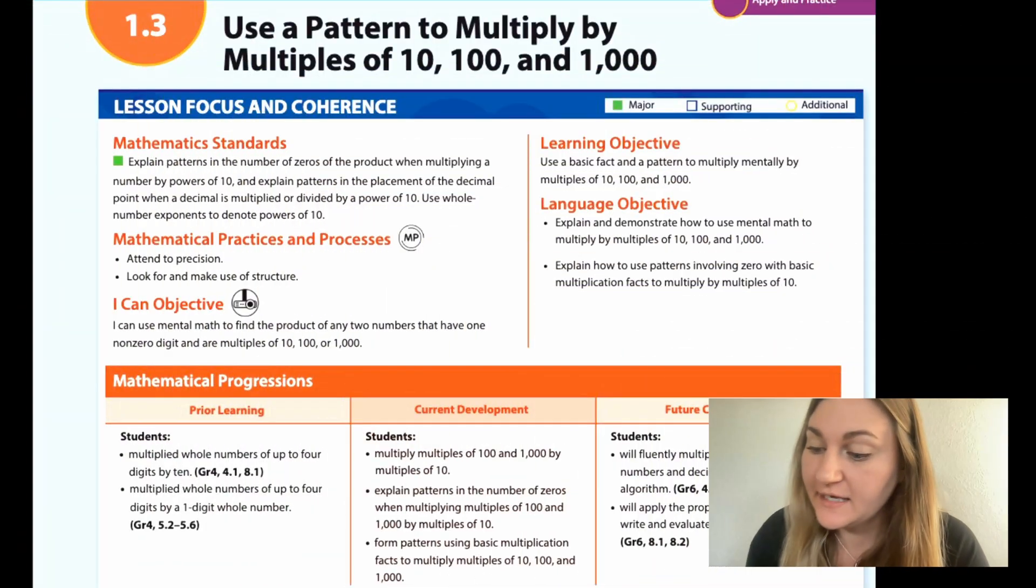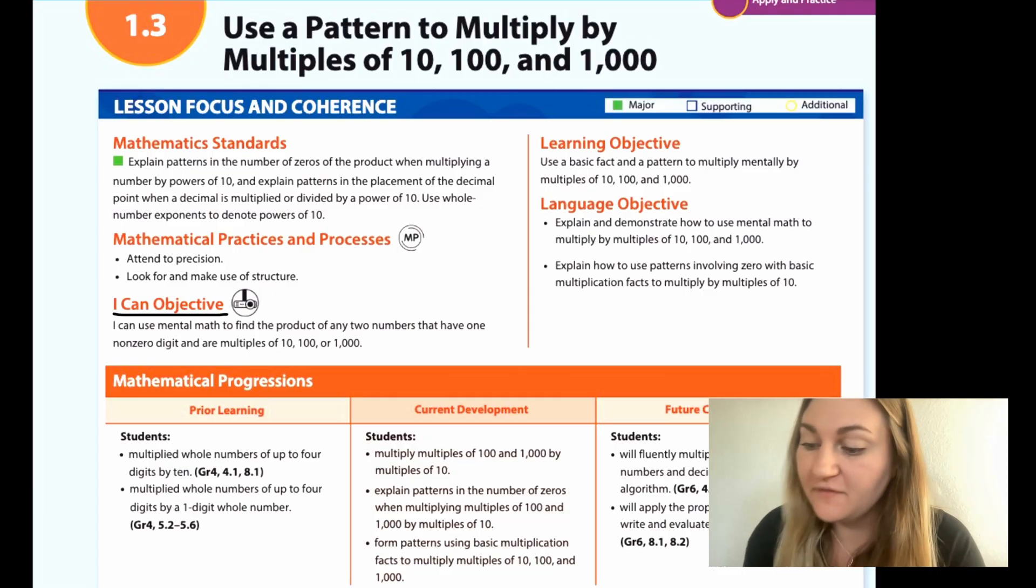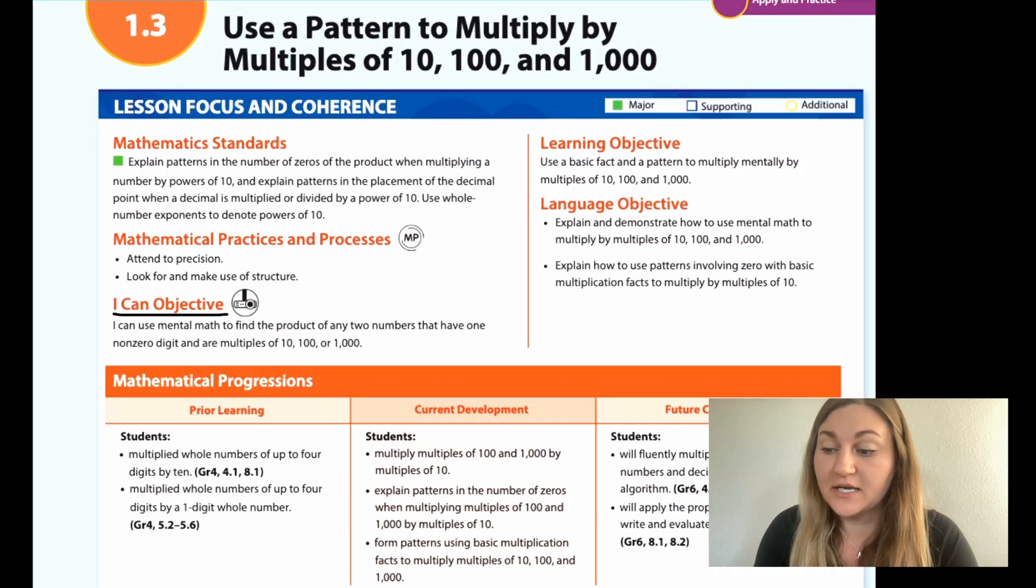I want to start by going over the I CAN objective. I can use mental math to find the product of any two numbers that have one non-zero digit and are multiples of 10, 100, and 1,000.